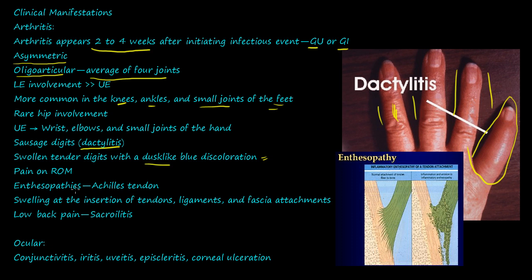There are enthesopathies in the Achilles tendon. An enthesopathy is inflammation and erosion at the insertion point where a tendon or ligament embeds into bone — like tree roots into the ground. Tendons attach muscles to bones and ligaments attach bone to bone. In Reiter's syndrome, you specifically see this enthesopathy in the Achilles tendon.